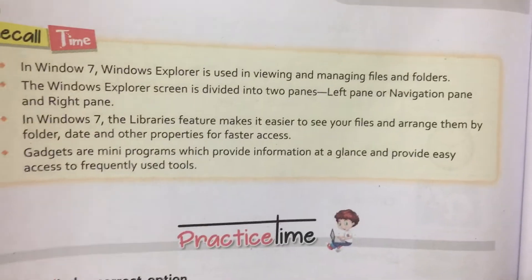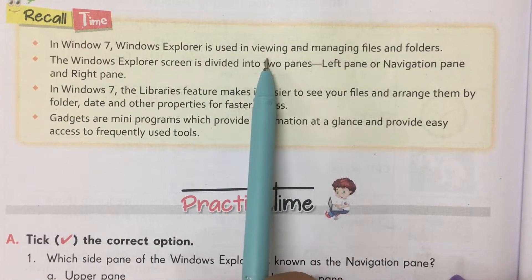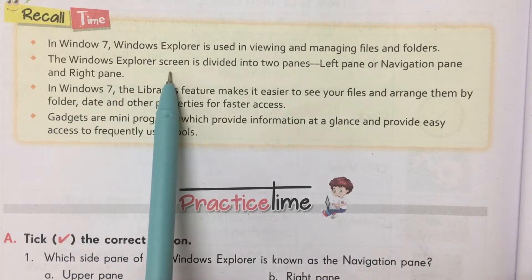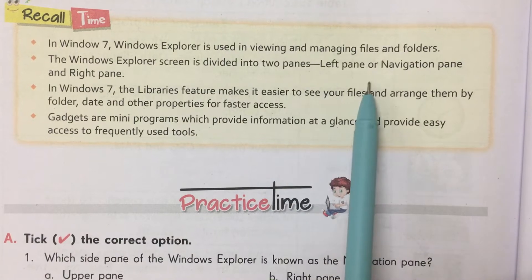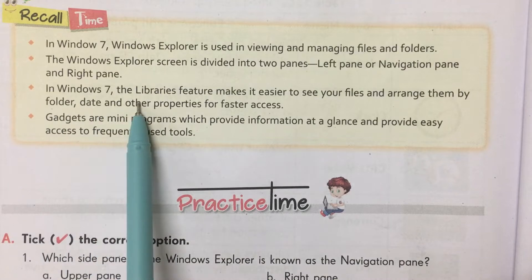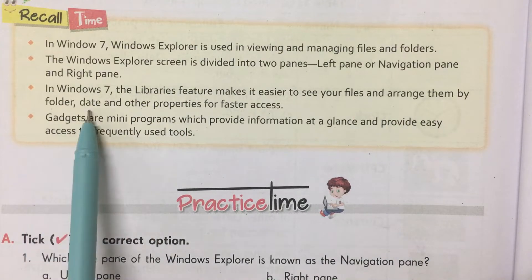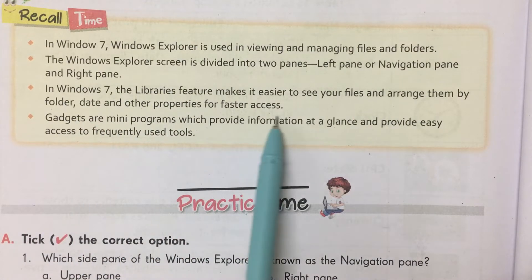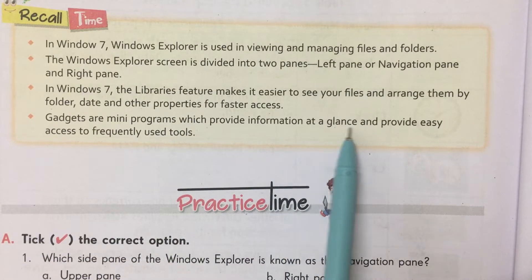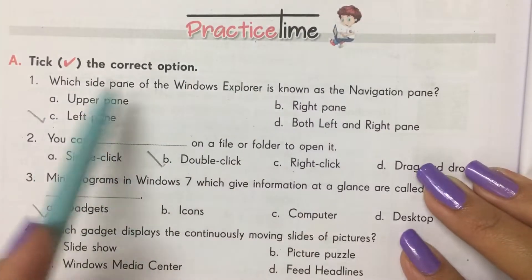Now recall time. In Windows 7, Windows Explorer is used in viewing and managing files and folders. The Windows Explorer screen is divided into two panes: left pane or navigation pane, and right pane. The Libraries feature makes it easier to see your files and arrange them by folder, date, and other properties for faster access. Gadgets are mini programs which provide information at a glance and provide easy access to frequently used tools.